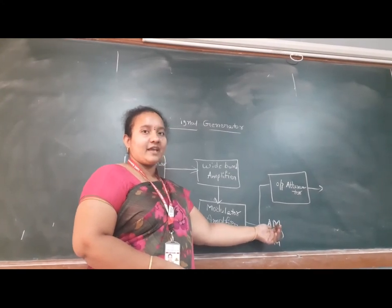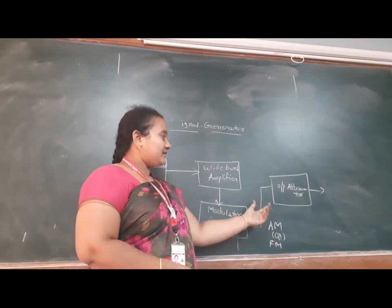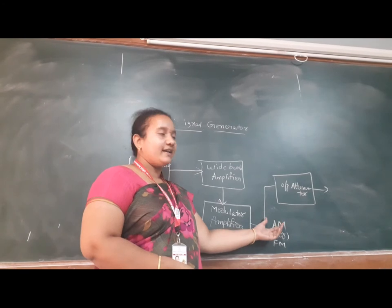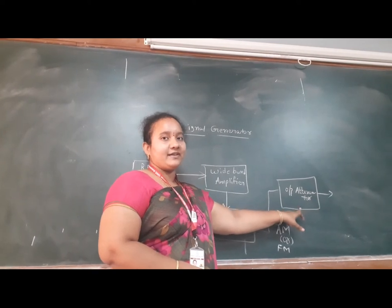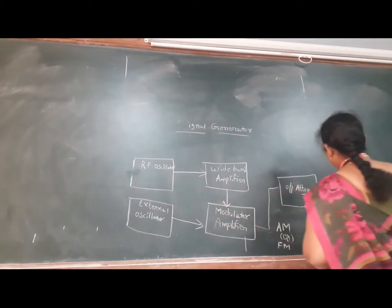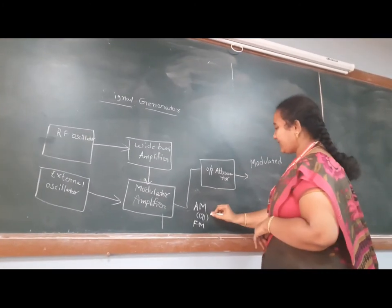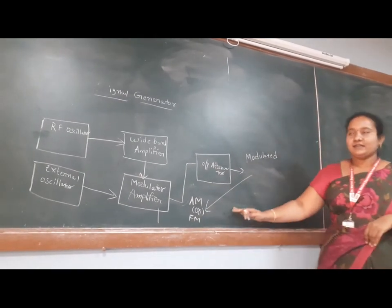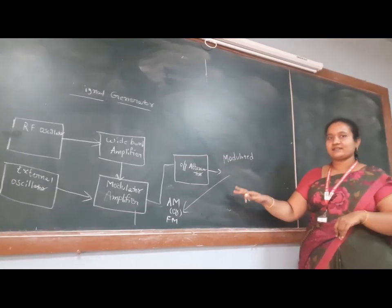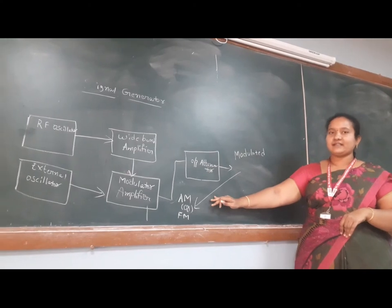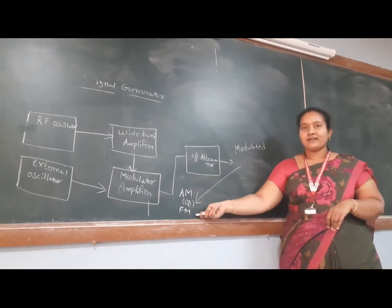The output is either in the form of AM — amplitude modulation — or FM — frequency modulation. If this modulated output consists of high power or high voltage values, the attenuator optimizes those levels. Finally we get the modulated output, either AM or FM. The main purpose of the signal generator is to generate signals like sinusoidal or square, and in this basic block diagram we are getting a sinusoidal signal as an output, either in the form of AM or FM.